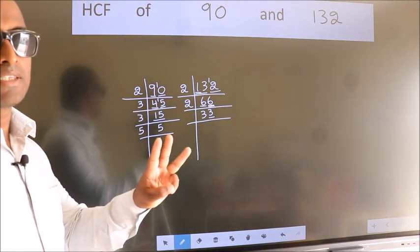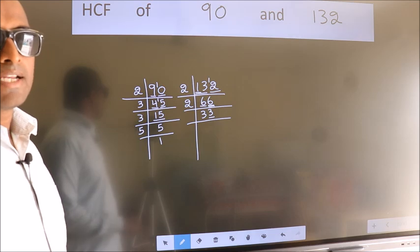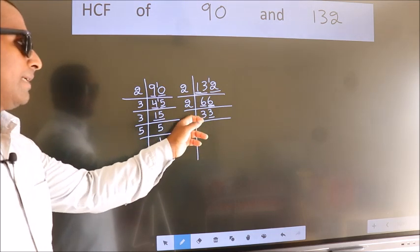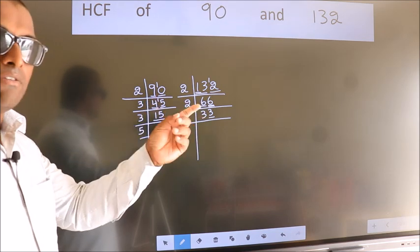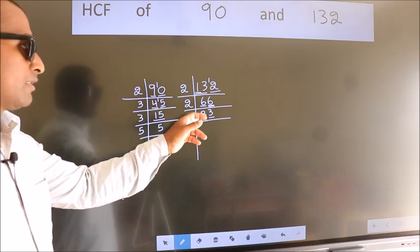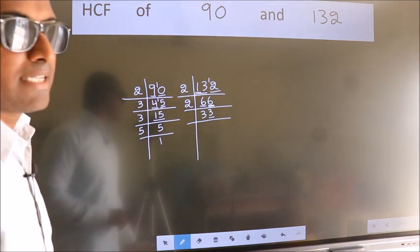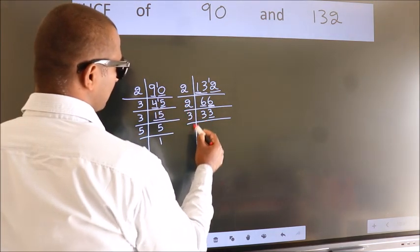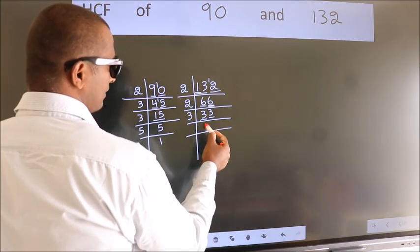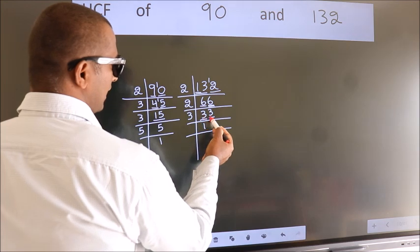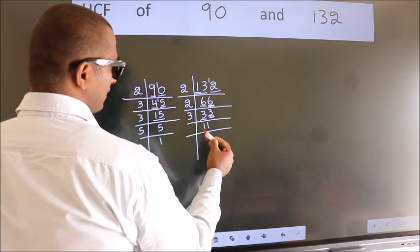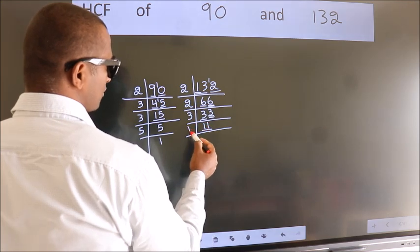Next prime number: 3. To check divisibility by 3, add the digits: 3 plus 3 equals 6. Is 6 divisible by 3? Yes. So this number is also divisible by 3. Take 3. When do we get 3 in the 3 times table? 3 ones 3. The other number is 3. 3 ones 3. Now 11 is a prime number, so 11 ones 11.